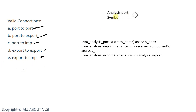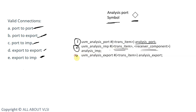These are the valid connections which are possible. Coming to the symbol of the analysis port — this is the symbol. How we are going to declare our analysis port: the first syntax is `uvm_analysis_port #(transaction) port_handle_name` — it is a parameterized class. The second is `uvm_analysis_imp #(transaction, receiver_component_name) handle_name` — the implementation port has two arguments: the transaction item and the receiver component name. The third is `uvm_analysis_export #(transaction) handle_name`.